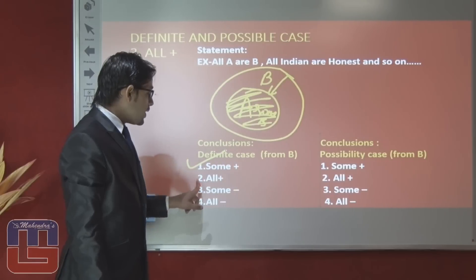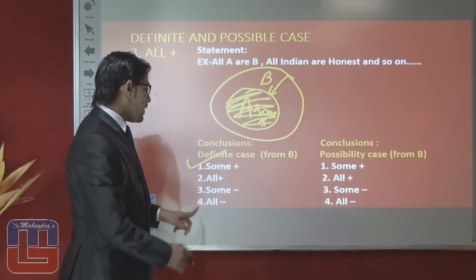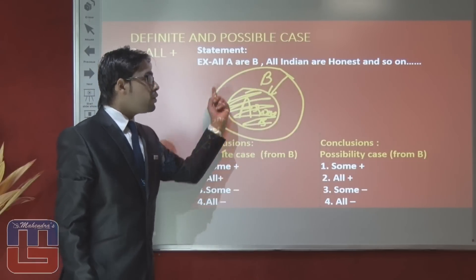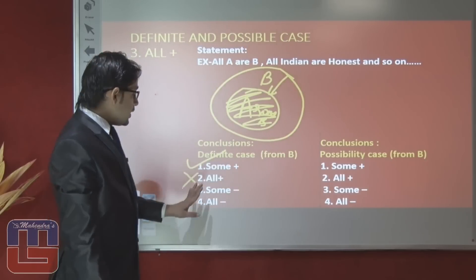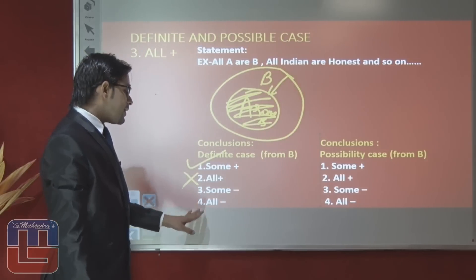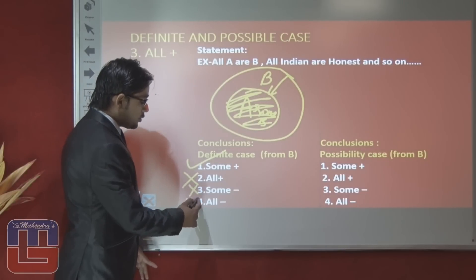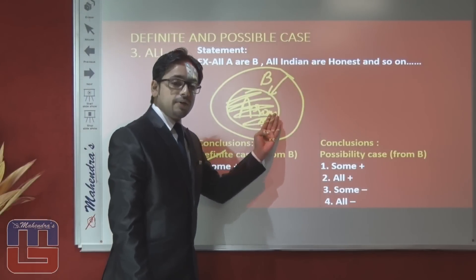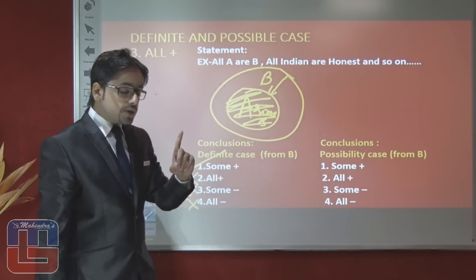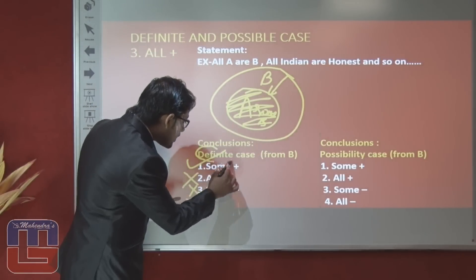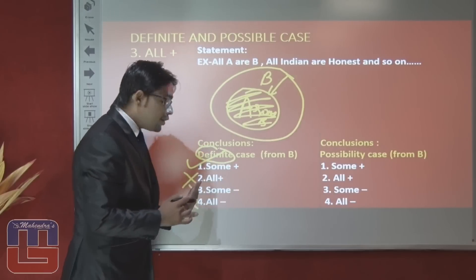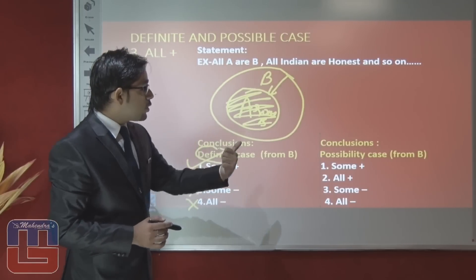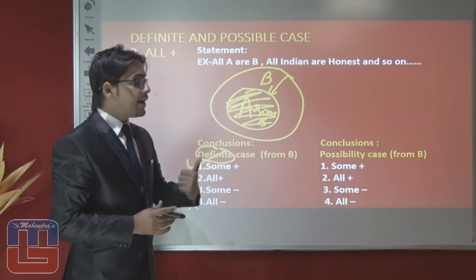If the examiner wants to know 'all B are A,' the answer is false because we cannot conclude about all parts of B. Negative conclusions regarding B to A are false because the statement is positive. In definite manner: positive statement means positive conclusion only. Let's talk about conclusions regarding possibility from the point of view of B.